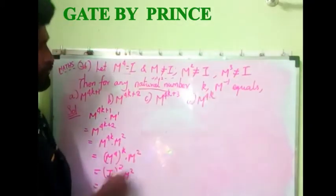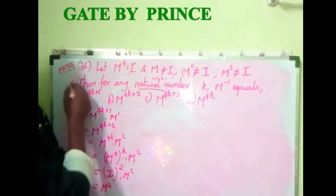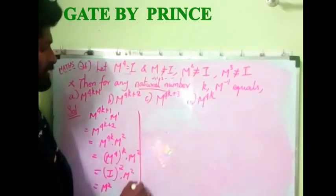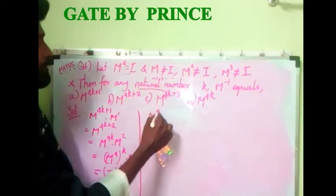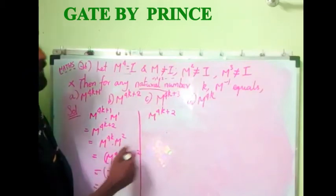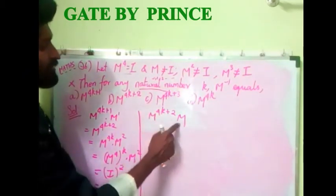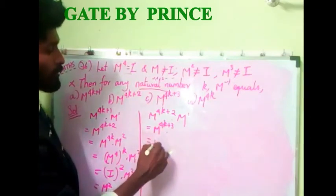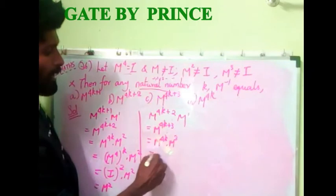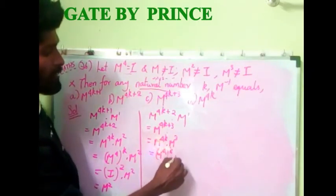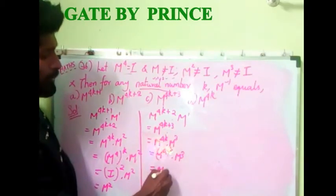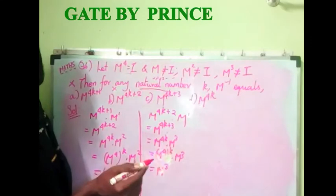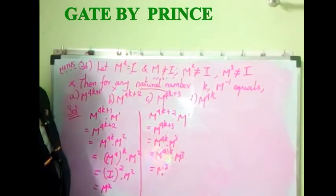The result for option A is m squared, but I need to get m inverse — m squared is not equal to m minus 1, so option A is not right. Moving to option B: m power 4k plus 2. Multiplying by m gives m power 4k plus 3, which equals m power 4k into m cubed, and since m power 4 equals I, the result is m cubed. Option B is also not right.